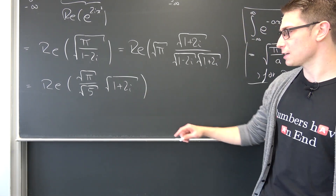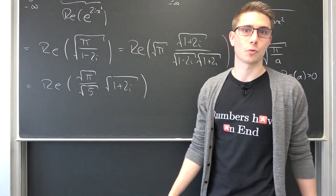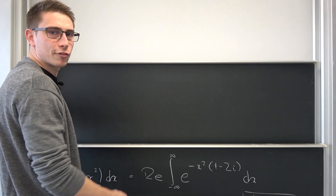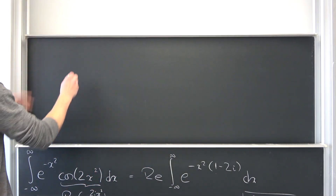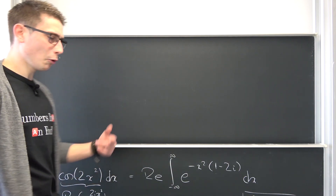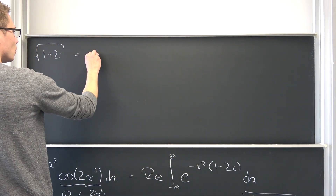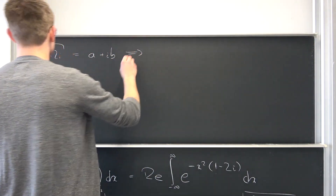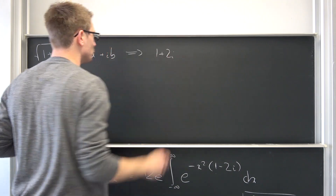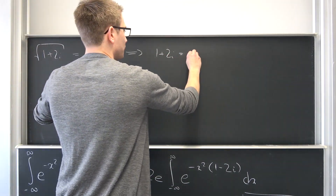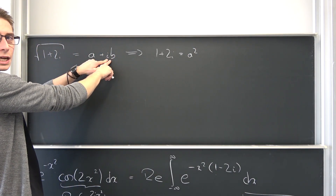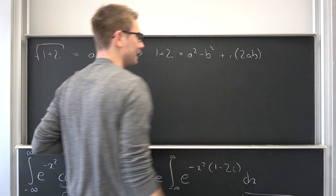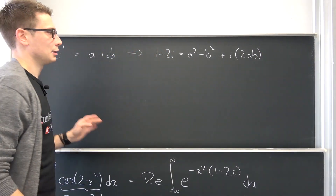Now we can make use of the third binomial rule — we multiply those together and get the magnitude squared, just the magnitude of this complex number. So we get the real part of square root of pi, and 1 squared plus 2 squared gives us 5, so square root of pi over square root of 5 times the square root of 1 plus 2i. We've gotten rid of the reciprocal complex number, but now we have the square root of 1 plus 2i, which includes some messy calculations.